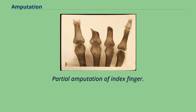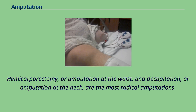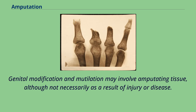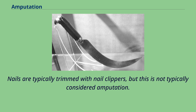Partial amputation of the index finger is another type. Hemicorporectomy, or amputation at the waist, and decapitation, or amputation at the neck, are the most radical amputations. Genital modification and mutilation may involve amputating tissue, although not necessarily as a result of injury or disease. Nails are typically trimmed with nail clippers, but this is not typically considered amputation.